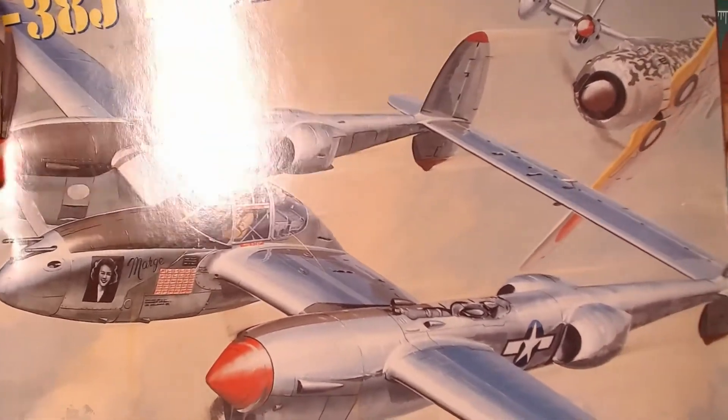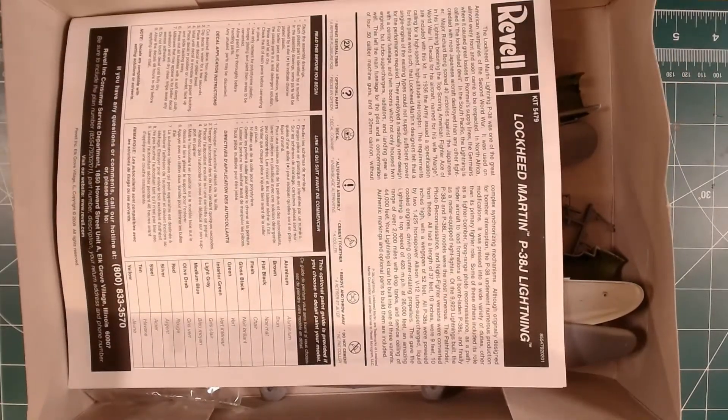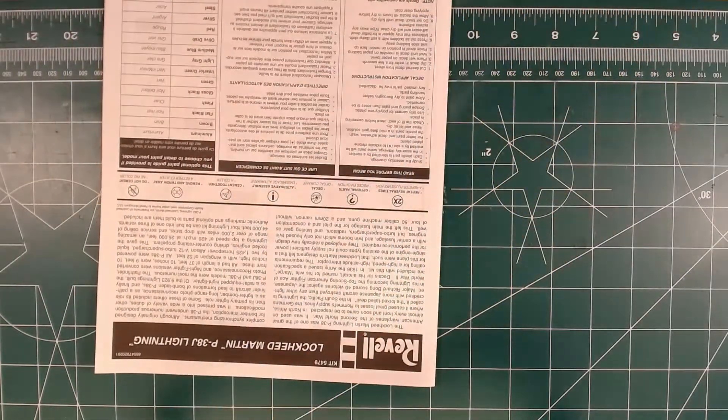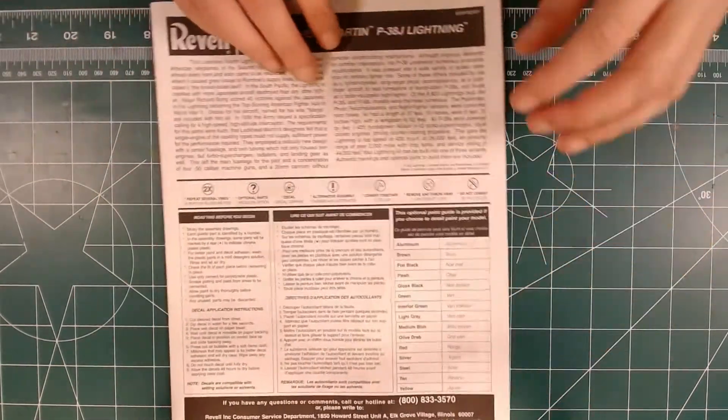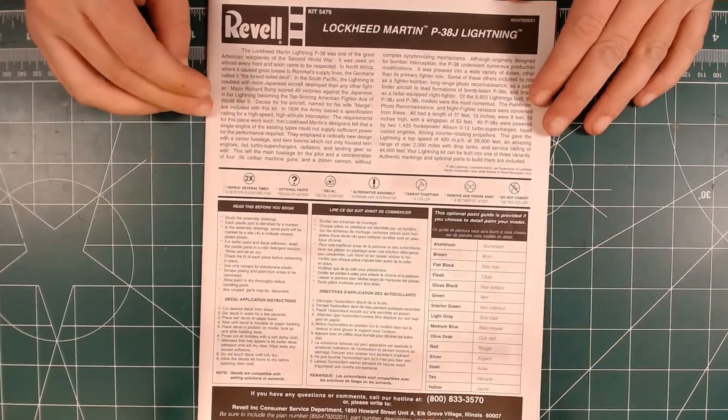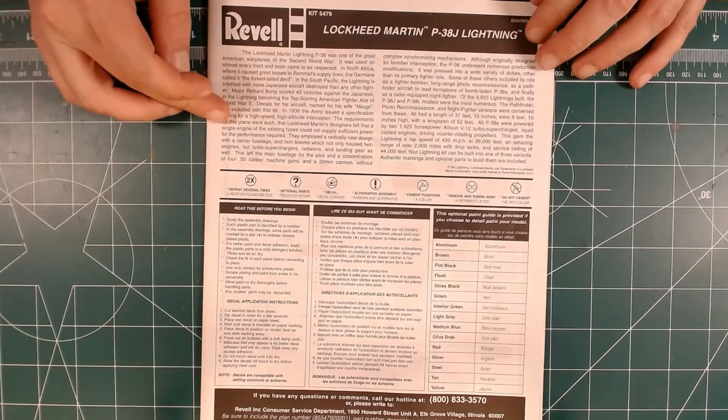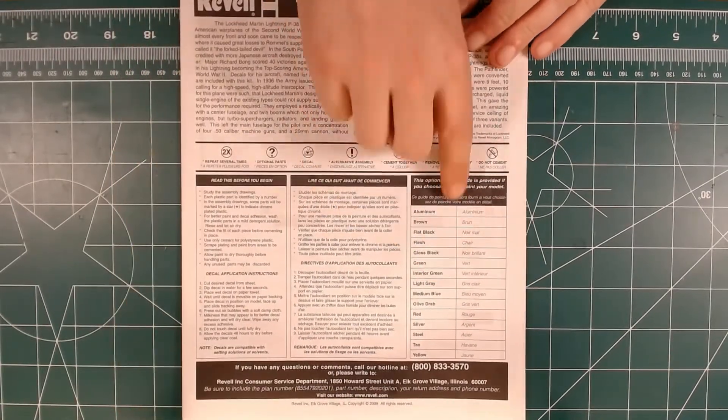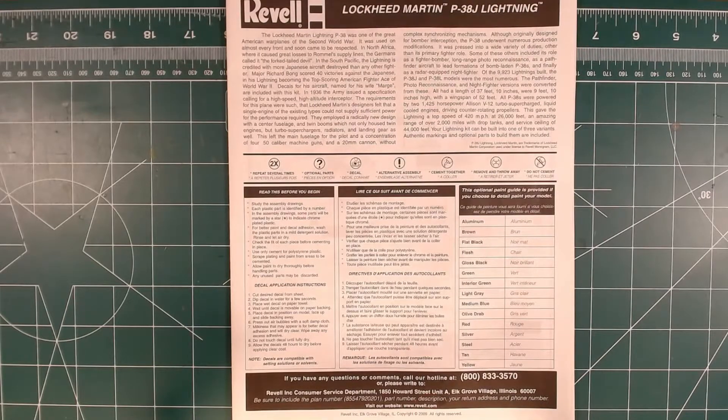Now, like I said, I've already started this model. I haven't done much to it. All I've done was paint some base color on a few parts. So here's our instructions. Got a little bit of history on the plane itself. Symbols for the instructions and suggested colors for painting. You're not going to use all the colors because there's three different versions of this plane. There's the fighter bomber version, which we're going to build. There's a pathfinder version and there is also a night bomber version.